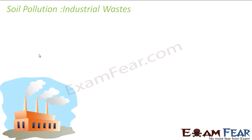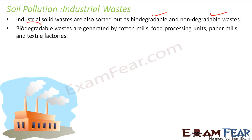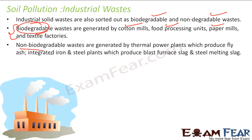The next kind of soil pollution is industrial waste. Industrial waste includes both biodegradable and non-biodegradable waste. Biodegradable waste comes from cotton mills, food processing industries, paper mills, and textile factories. Non-biodegradable waste comes from thermal power plants — such as fly ash — and from iron and steel plants, which produce slag.